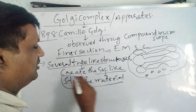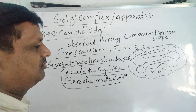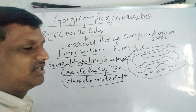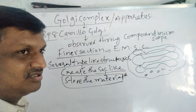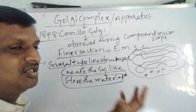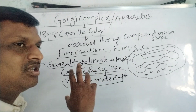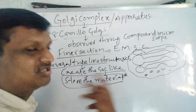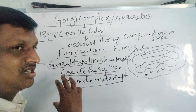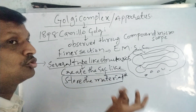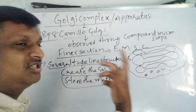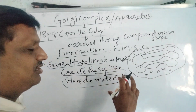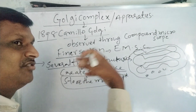The major function of the Golgi complex is to store materials in the cell — it acts as a storage place. In the previous class we discussed endoplasmic reticulum, which is for transportation of materials. The Golgi complex, by contrast, is primarily for storage of materials, and after storage it can also transport the material.